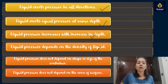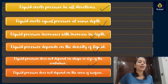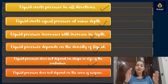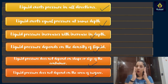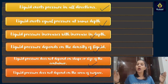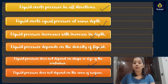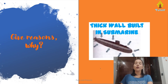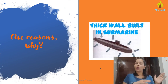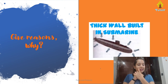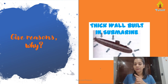Liquid pressure does not depend on the shape or size of the container, and lastly, liquid pressure does not depend on the area of the surface. Even if you have a small beaker or a large beaker, the pressure would be the same at the same depth in both containers. Now let's apply all these properties and give reasons for why certain things are done the way they are.